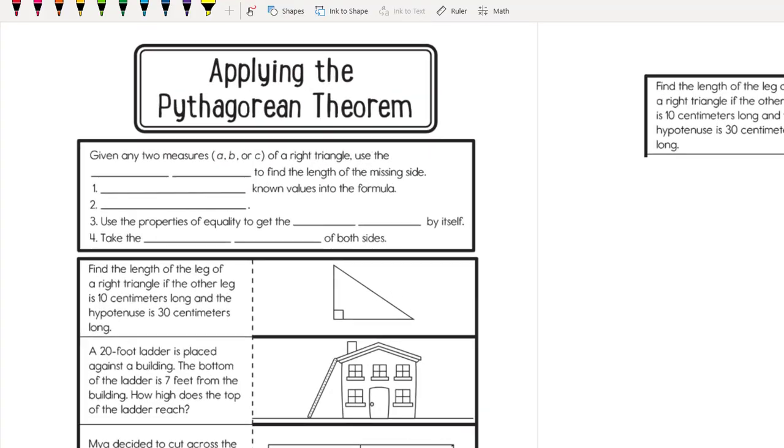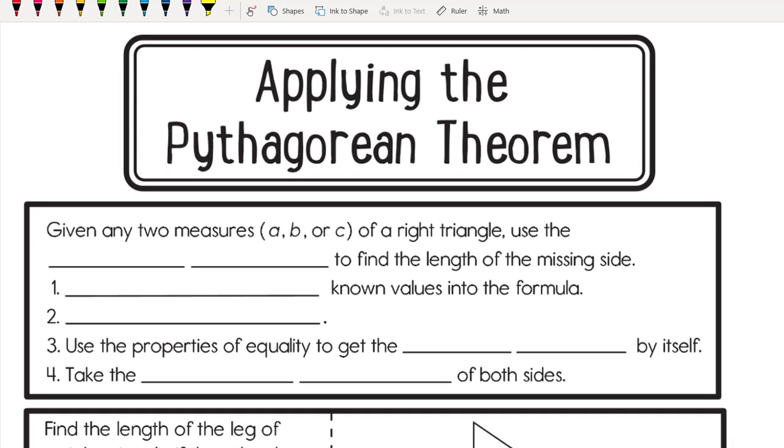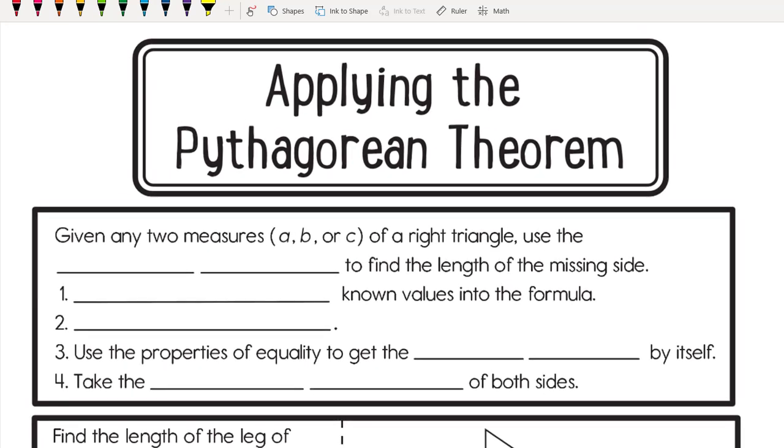Now we're going to look at applying the Pythagorean theorem in a real-world situation. Let's fill out the directions first. Given any two measures a, b, or c, whether we have the legs or the hypotenuse of a right triangle, we're going to use the Pythagorean theorem.